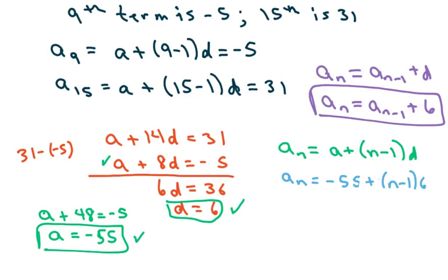So a sub n equals negative 55 plus 6n minus 6. So a sub n equals 6n minus 61.